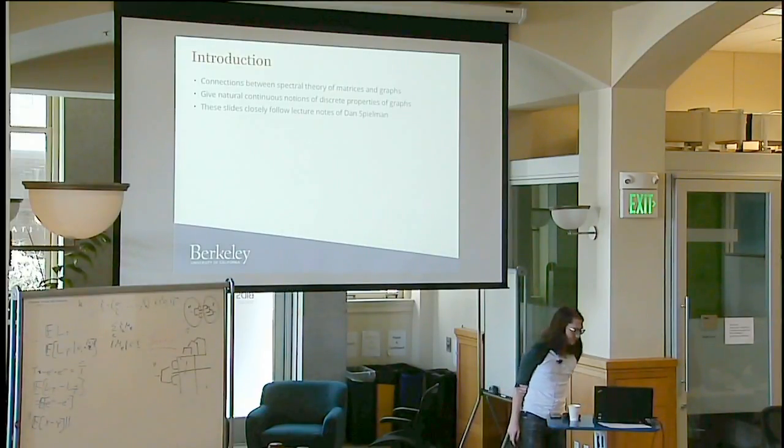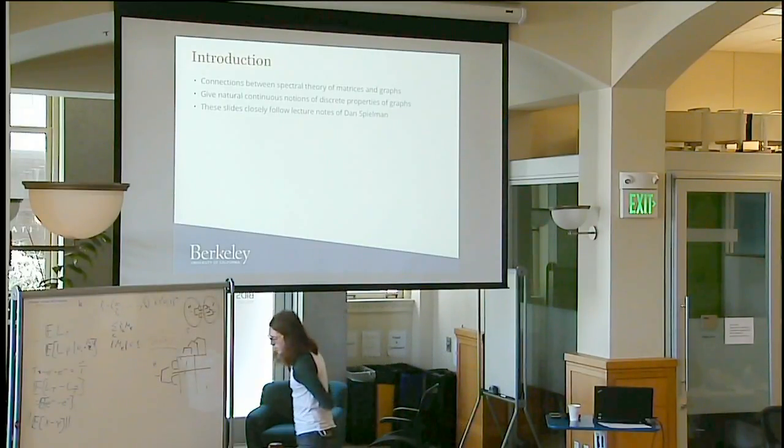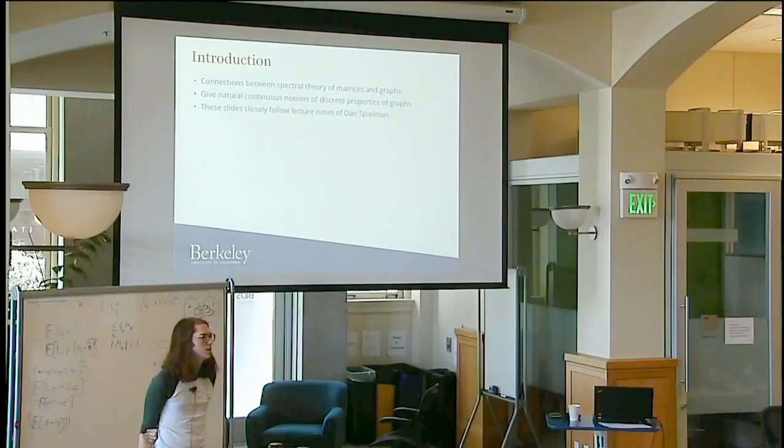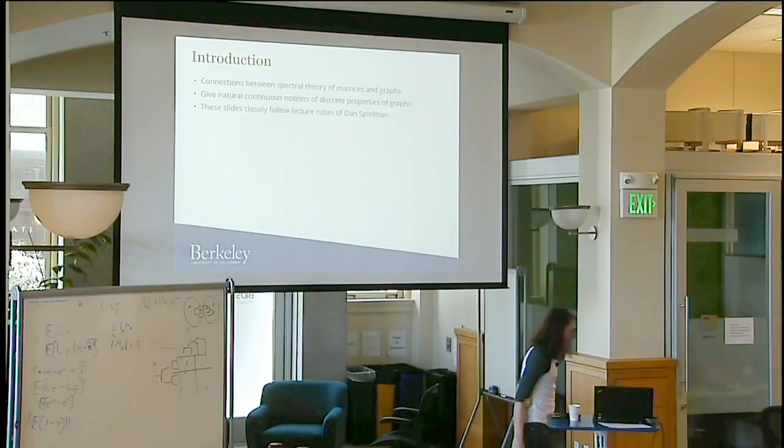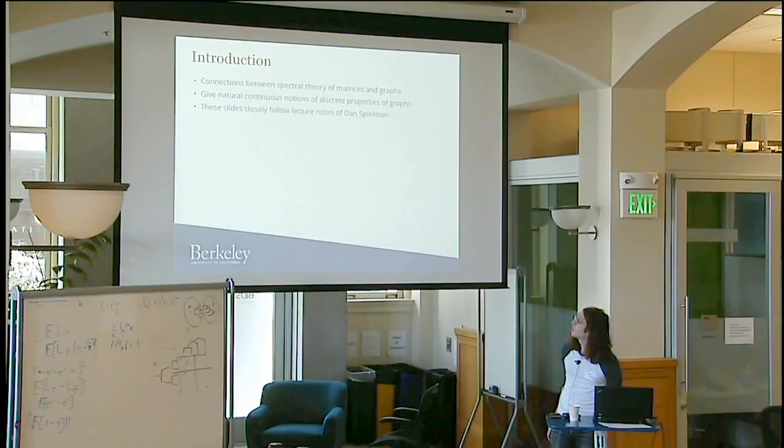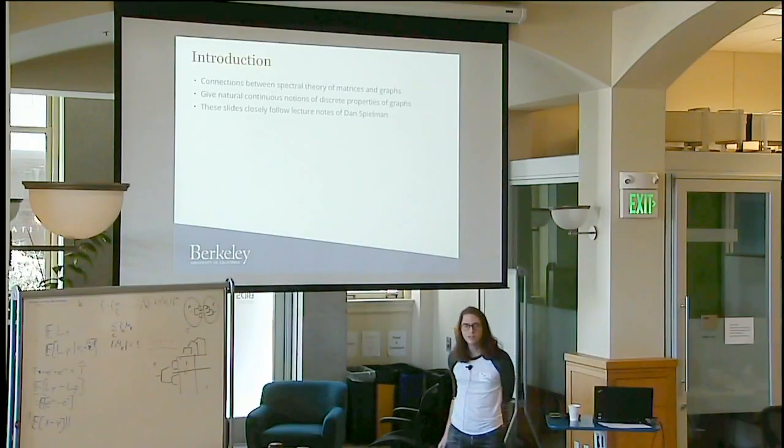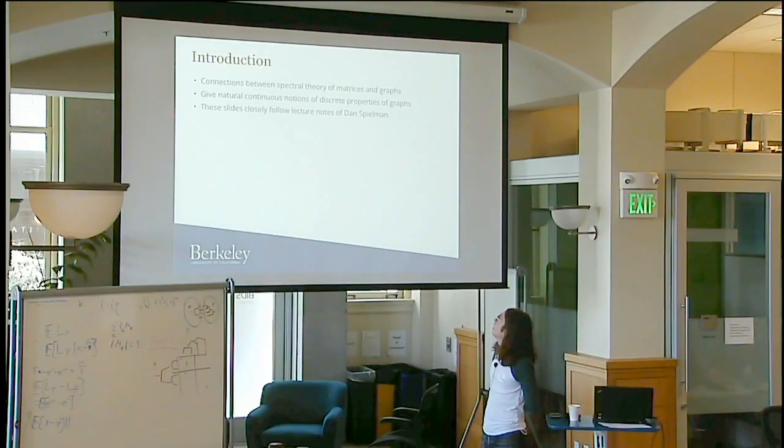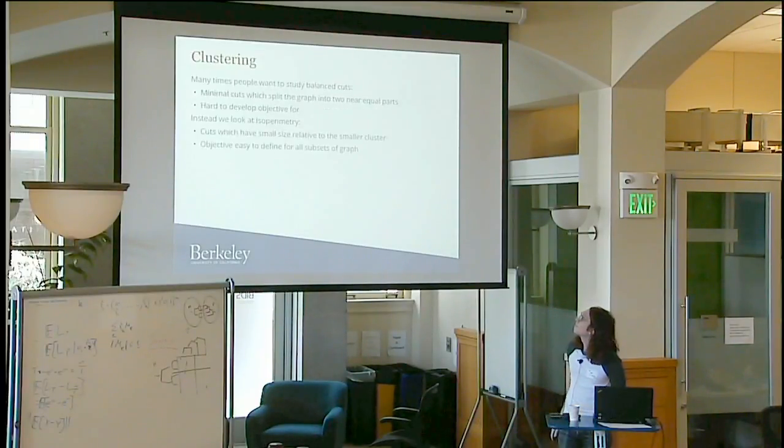So what do I think when I think spectral graph theory? Spectral graph theory gives us a way of associating continuous objects to discrete properties of graphs. We often want to look at things on graphs like cliques, connected components, or matchings, and it's nice to have a continuous relaxation of these so we can use techniques from other fields. We want to associate linear algebraic objects to graphs so that we get continuous properties that relate to discrete properties we're interested in. I should note these slides closely follow lecture notes of Dan Spielman.